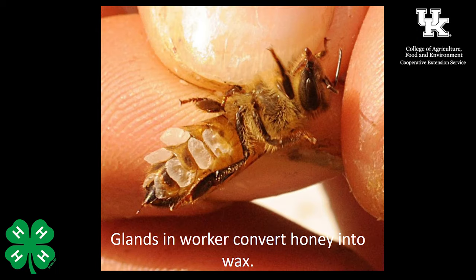The eggs are laid in wax cells, and the honey is also produced in these wax cells. Where does the wax come from? Worker bees have glands in their abdomen that produce wax flakes. When wax is needed, they ingest honey, which goes through their body and produces these wax flakes. They then chew the flakes and form the honeycomb you've probably seen many times, allowing them to put brood in and store nectar that eventually becomes honey.